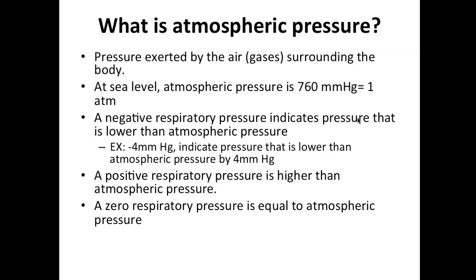What is atmospheric pressure? It is the pressure exerted by gases surrounding a body. At sea level, atmospheric pressure is 760 millimeters of mercury, or 1 atm. If you have a negative respiratory pressure, it indicates that the pressure is lower than atmospheric pressure — for example, a negative 4 millimeter mercury respiratory pressure indicates it is lower than atmospheric pressure by 4 millimeters of mercury.